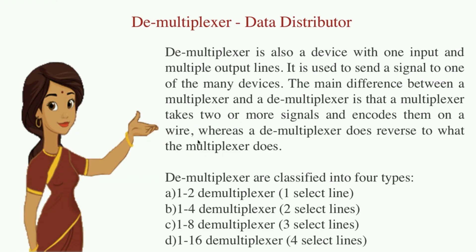A demultiplexer is also called a data distributor. It is a device which has one input signal and multiple output lines — it can send one input signal to many devices. A demultiplexer is mainly of four types: one-to-two, one-to-four, one-to-eight, and one-to-sixteen.